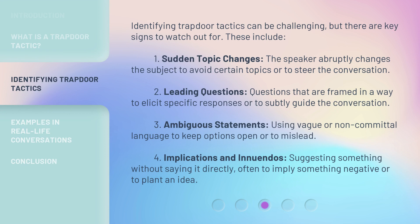Identifying trapdoor tactics can be challenging, but there are key signs to watch out for. First, sudden topic changes — the speaker abruptly changes the subject to avoid certain topics or to steer the conversation. Second, leading questions — questions that are framed in a way to elicit specific responses or to subtly guide the conversation. Third, ambiguous statements — using vague or non-committal language to keep options open or to mislead.